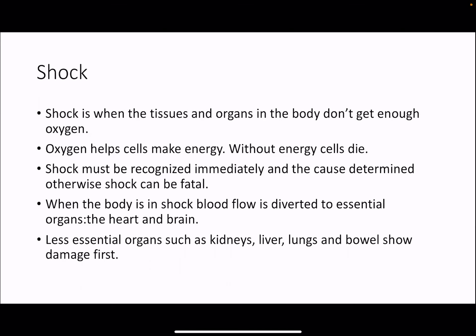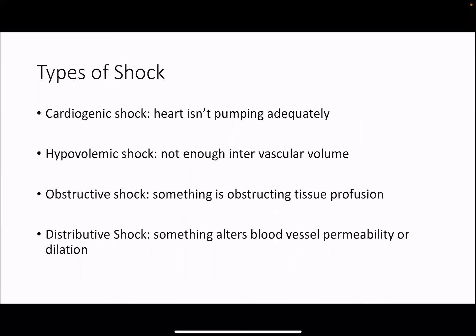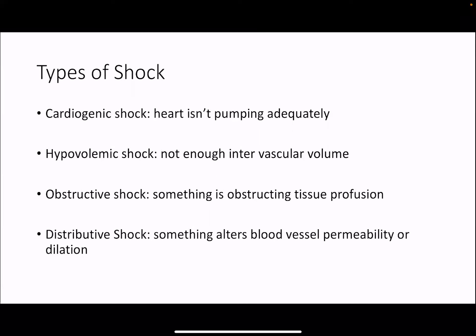Shock must be recognized immediately and the cause determined — otherwise it can be fatal. When the body is in shock, blood flow is diverted to the essential organs: the heart and the brain. Less essential organs such as the kidney, liver, lungs, and bowel show damage first. The four types: cardiogenic shock is when the heart isn't pumping adequately; hypovolemic shock is when there isn't enough intravascular volume; obstructive shock is when something is obstructing tissue perfusion; and distributive shock is something that alters blood vessel permeability or dilation.